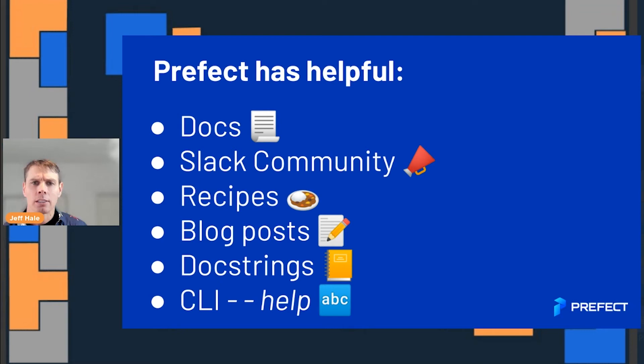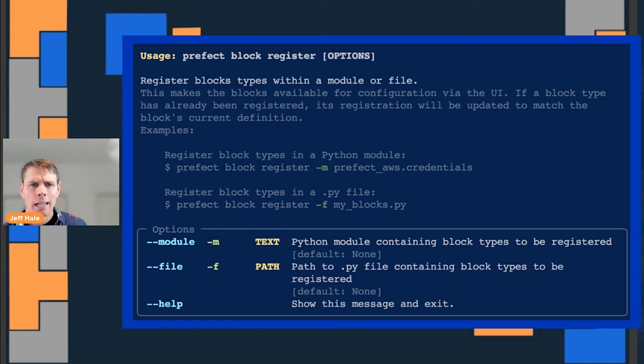If you want to learn how to do this or get stuck on something, we've got docs, a Slack community with over 23,000 members, recipes for common use cases, lots of blog posts, and docstrings available everywhere. Anytime you do a '--help' in the CLI, you will get some help with how to run a command. For example, 'prefect block register --help' gives you information on exactly what that does right in your command line terminal.